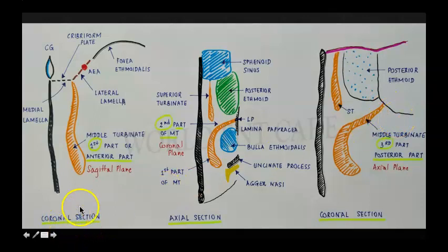Do not confuse with these sections. They are different from the planes at which the turbinate is present. This is the coronal section. This is an axial section. And this is again a coronal section.